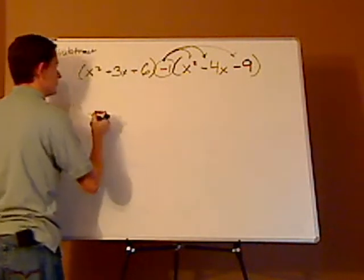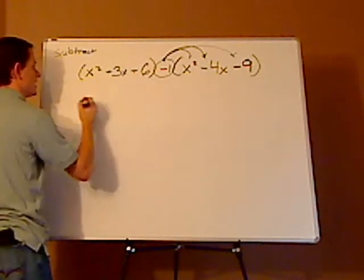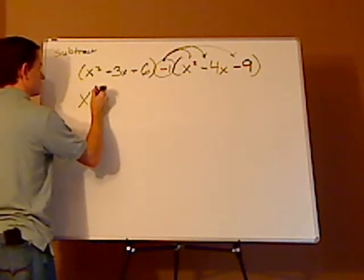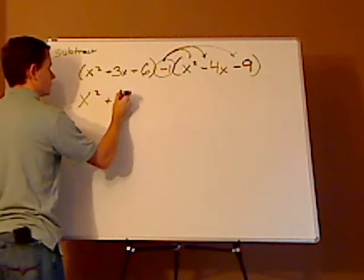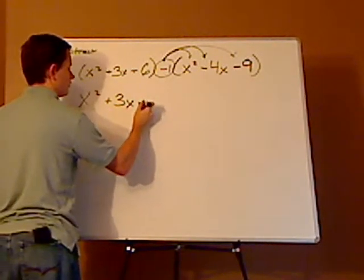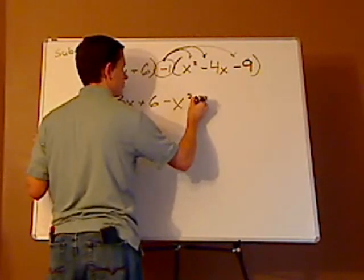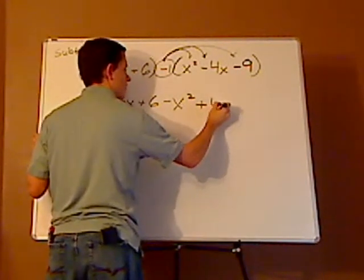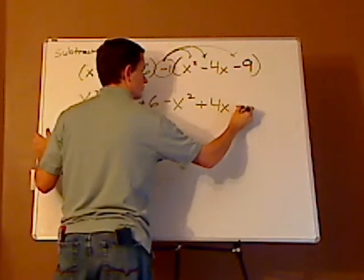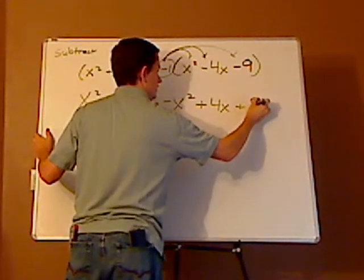So, then, you just distribute. This stays the same. So, it's x² + 3x + 6 - x² + 4x + 9.